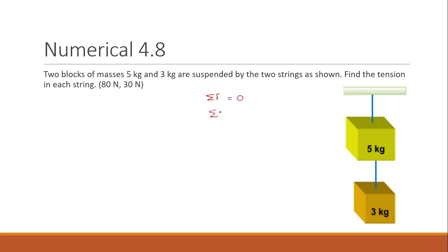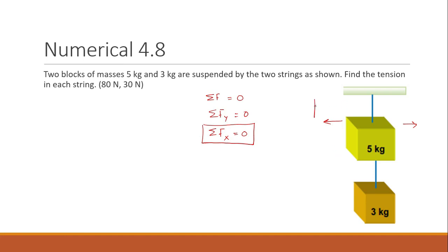The sum of forces in the y-direction should be zero, and the sum of the forces in the x-direction should be zero. In this figure there is no force in the x-direction, so the sum of Fx is zero. The sum of Fy is also equal to zero, as the two weights are hanging and in equilibrium — the upward forces and the downward forces are balanced.